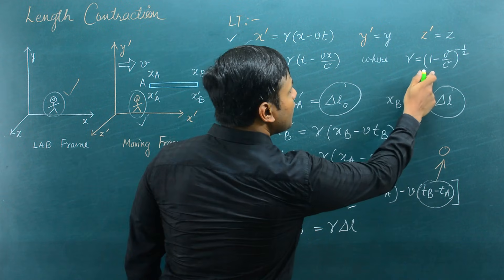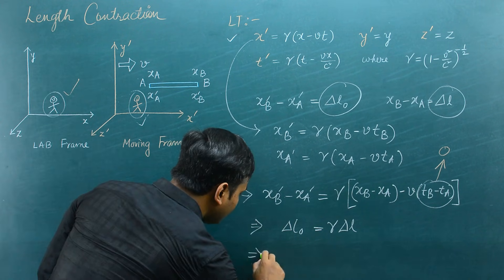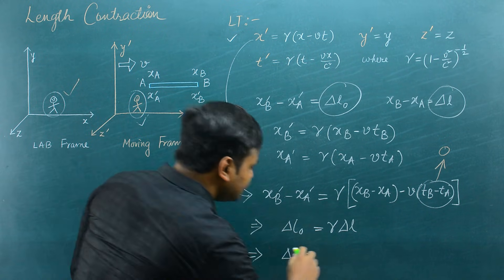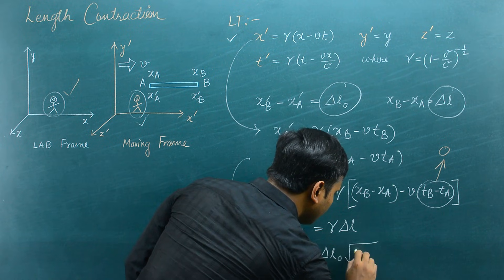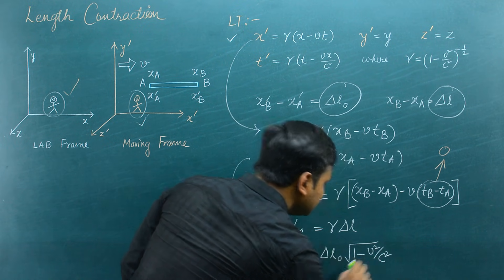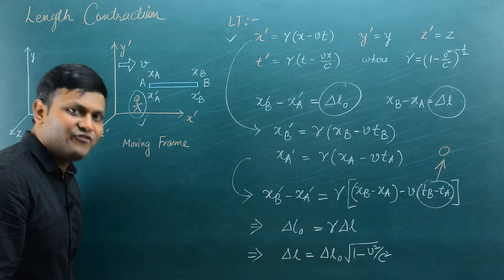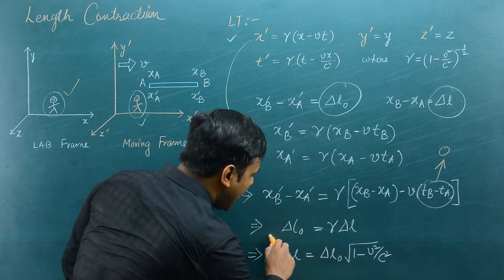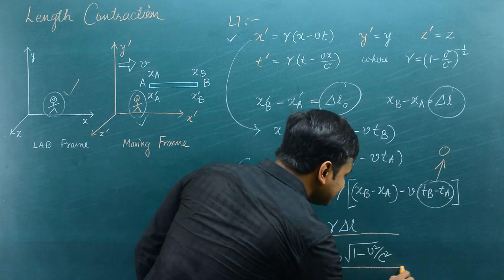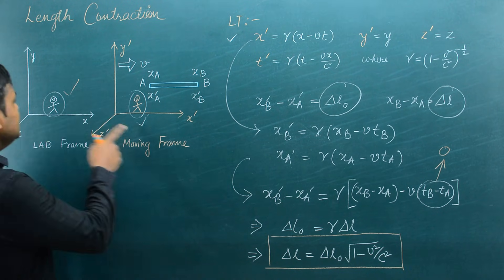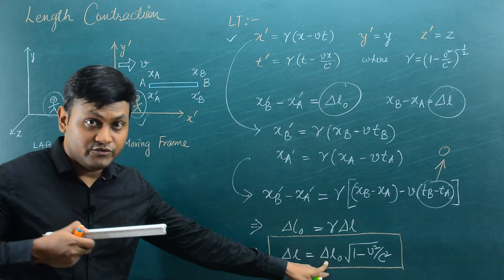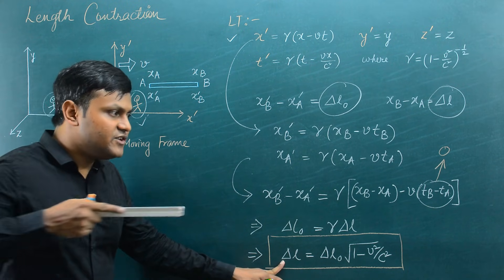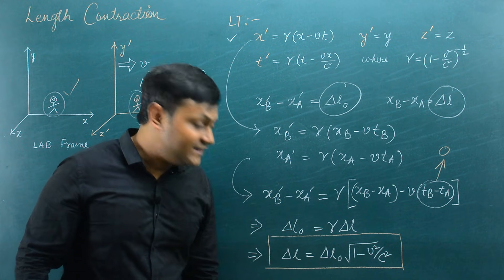Gamma is 1 over √(1 − v²/c²). So if I write this formula properly, I end up getting ΔL = ΔL₀ × √(1 − v²/c²). This is the relativistic length contraction formula, also known as the Lorentz contraction formula. This formula gives us an idea about how the measurements of the length of the rod between two observers are related: ΔL₀ is the proper length when the rod is at rest, and ΔL is the relativistic length when the rod is in relative motion.